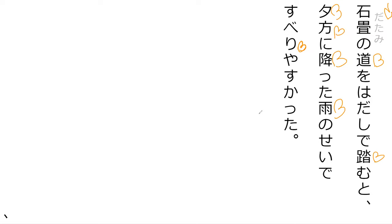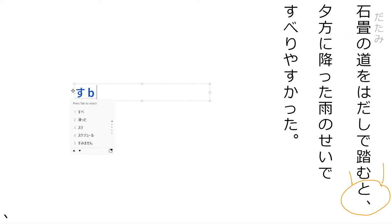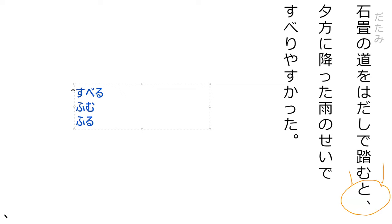So: 滑り安かった. Furu is to fall. Fumu is to step on. So here is 'fall,' here is 'step.' And fumu is to step - so to step barefoot on the path.